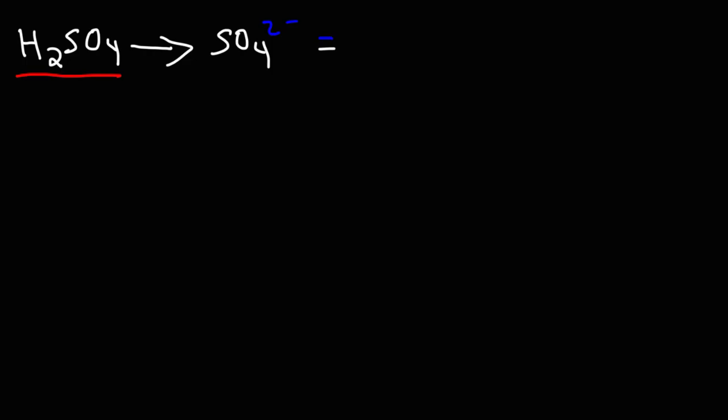We need to add up the valence electrons in sulfate. Sulfur has six valence electrons. It's found in group 6A or group 16 of the periodic table. And the same is true for oxygen, but we have four oxygen atoms. We'll need to add two because we have a negative charge. Four times six is 24, plus six is 30, plus two is 32. So we have 32 valence electrons in the sulfate Lewis structure.